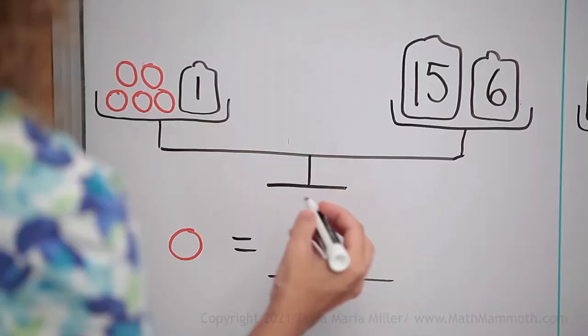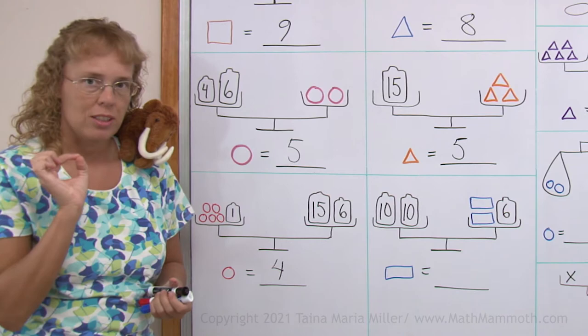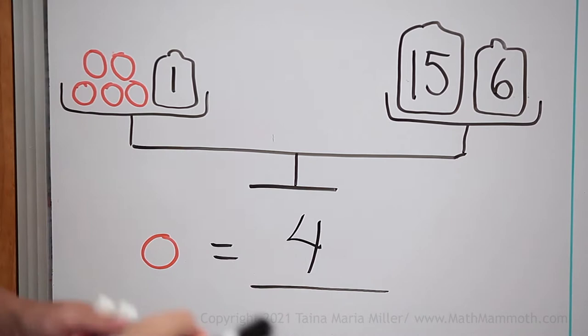And this time, let's check the equation. By checking, I mean that if this is 4, I'm going to check if these two weights are actually equal. 4, 4, 4, 4, 4, that's 5 times 4, 20, plus 1, 21. Yes, it checks.